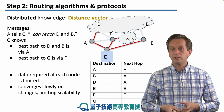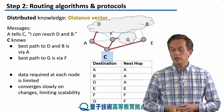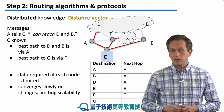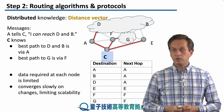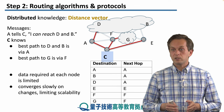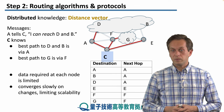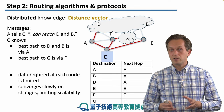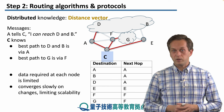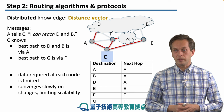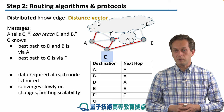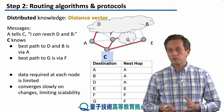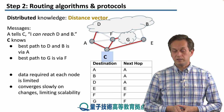The data required at each node is much more limited, and the messages exchanged between nodes are generally smaller. However, the convergence is worse compared to global routing algorithms, and therefore so is scalability.